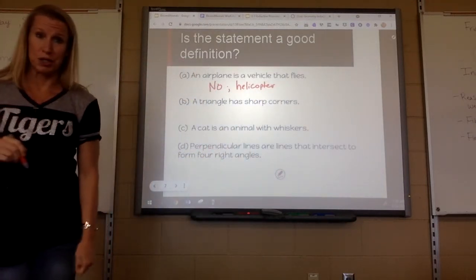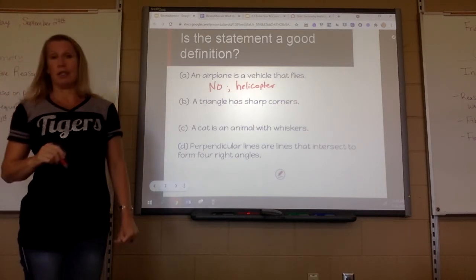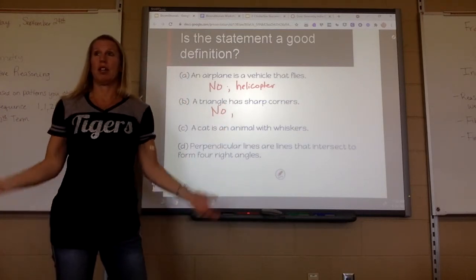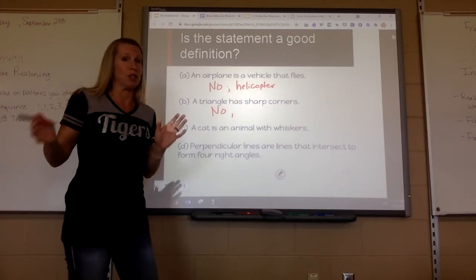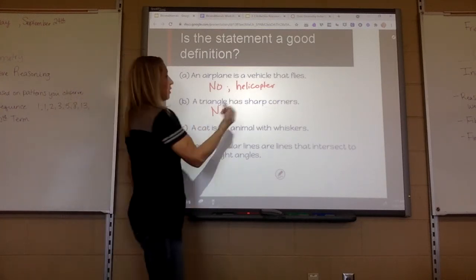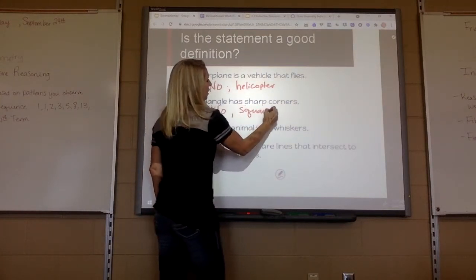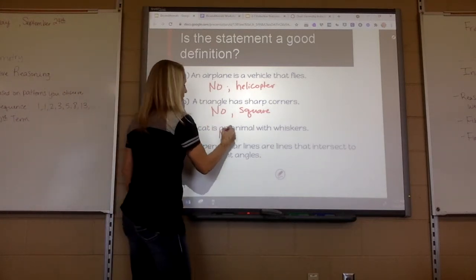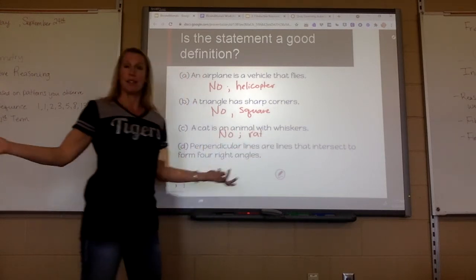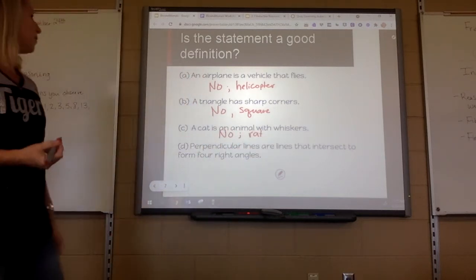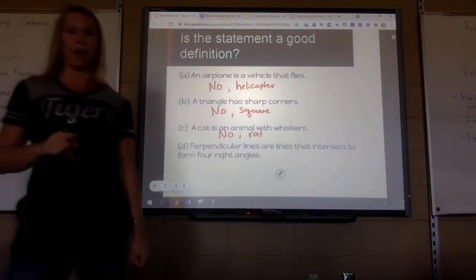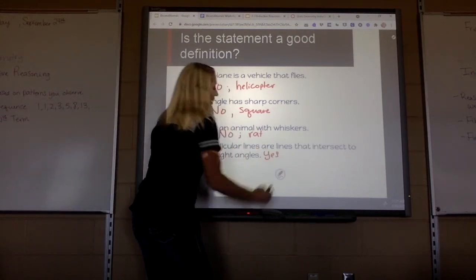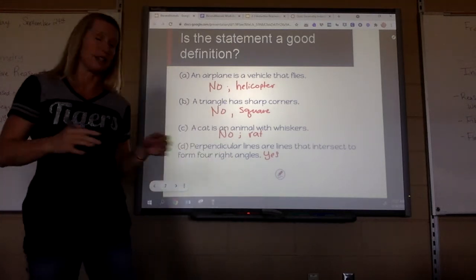'A triangle has sharp corners' — that's not a good definition. A counterexample could be a square, or even a road when you make a sharp right turn — lots of counterexamples. 'A cat is an animal with whiskers' — that's not a good definition either. A rat also has whiskers. 'Perpendicular lines are lines that intersect to form four right angles' — that would be a good definition, because that is precisely what perpendicular lines are.